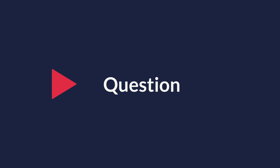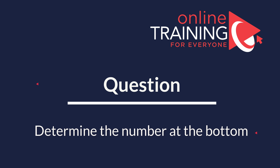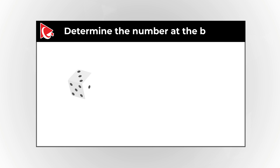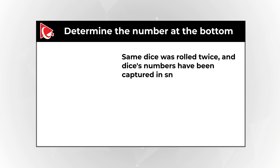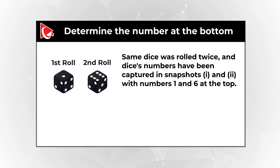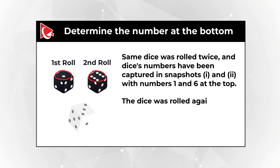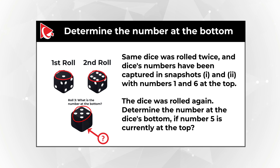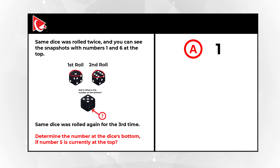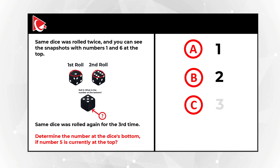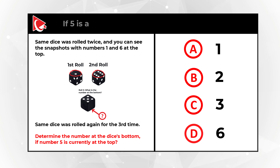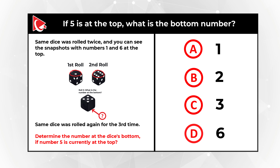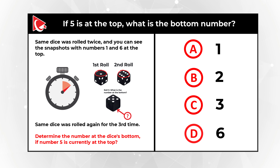Here's an interesting question where you need to determine the dice's number at the bottom. The dice was rolled twice, and the numbers have been captured in snapshots 1 and 2, with numbers 1 and 6 at the top. The dice was rolled again. You need to determine the number at the dice's bottom if number 5 is currently at the top. Choices: A=1, B=2, C=3, D=6. Please take a close look, because the answer may not be obvious.